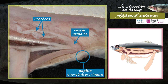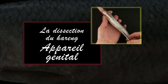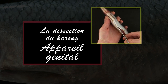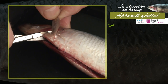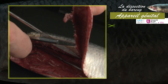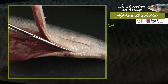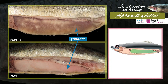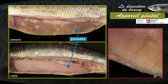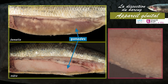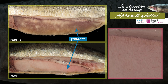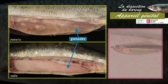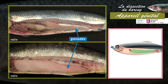La vessie débouche au niveau de la papille anogénitourinaire. La mise en évidence de l'appareil génital nécessite l'ouverture de la cavité abdominale. Les harengs sont des animaux à sexe séparé ou gonocoriques, mais ne présentent pas de dimorphisme sexuel. Dans les deux sexes, les gonades ont une forme allongée. Chez la femelle mature, les ovaires, d'aspect granuleux, sont de couleur rouge-oranger. Chez le mâle, les testicules sont de couleur claire et d'aspect laiteux. La taille des gonades est variable et dépend de l'état de maturation sexuelle de l'animal.